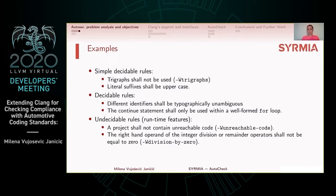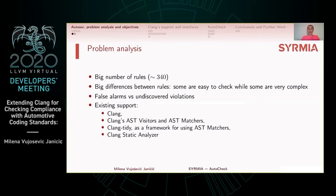Finally, there are some undecidable rules that describe runtime features of the code, like 'a project shall not contain unreachable code' and 'there will be no division by zero.' Such rules can be only partially implemented covering some specific scenarios, or implemented in a way that introduces false alarms. As being undecidable, it is not possible to write a precise algorithm that has no missed bugs nor false alarms. We therefore have a big number of rules — 340 — with big differences in complexity, where some are not even decidable.